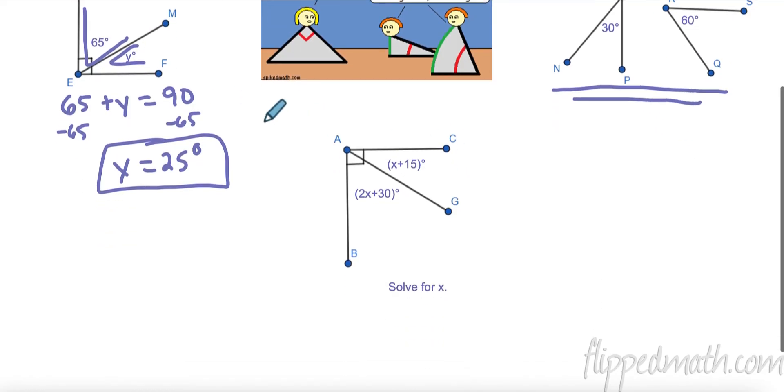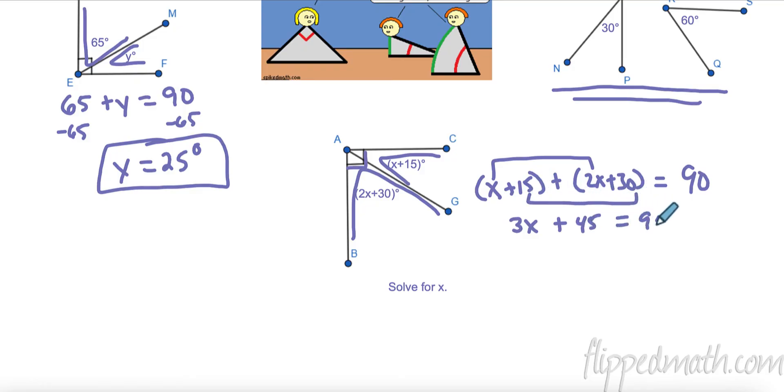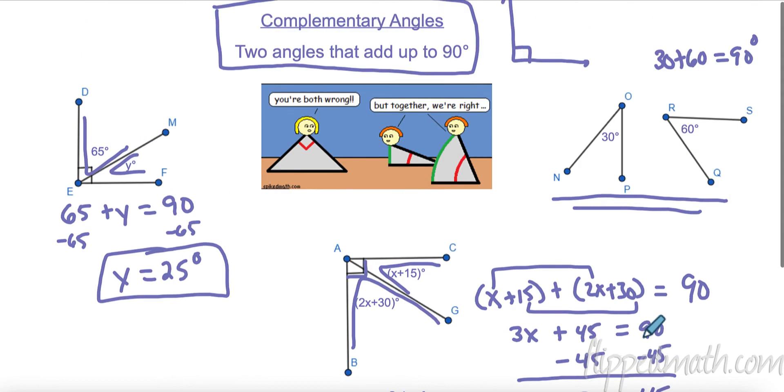Let's do this one down here. We know this is 90. So we know these angles are complementary. Let's make an equation. So this angle here, angle C, A, G, X plus 15 plus this angle, G, A, B, 2X plus 30. And that's going to come at how many degrees? 90 degrees. So now we need to solve. We can combine some like terms. 3X plus 45 equals 90. We can subtract 45 from both sides. So 3X equals 45. And then we can divide by 3. And then the last thing, we find that our X is 15. So complementary, they add up to 90.